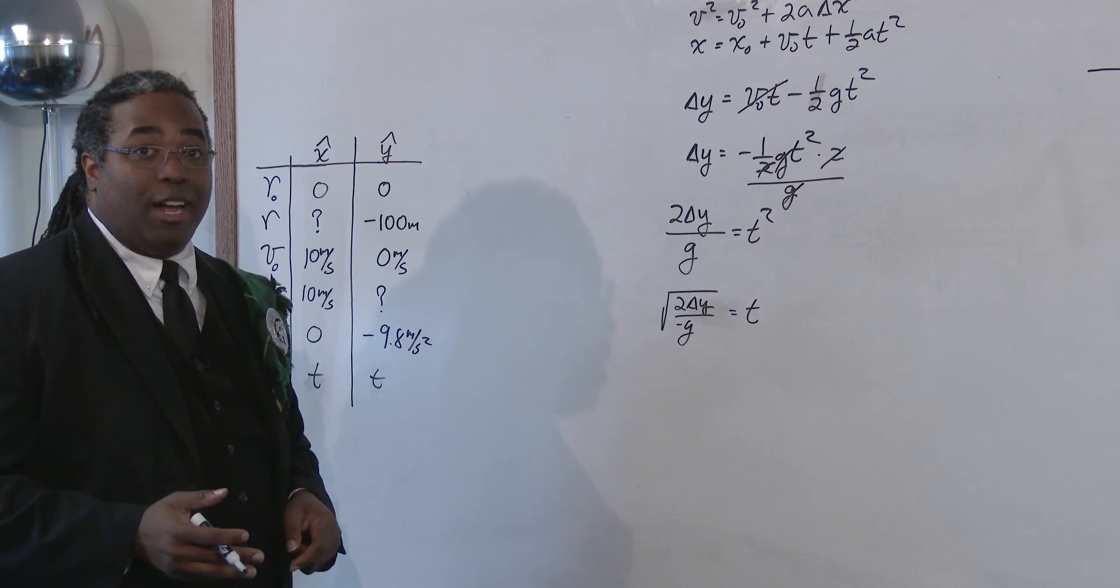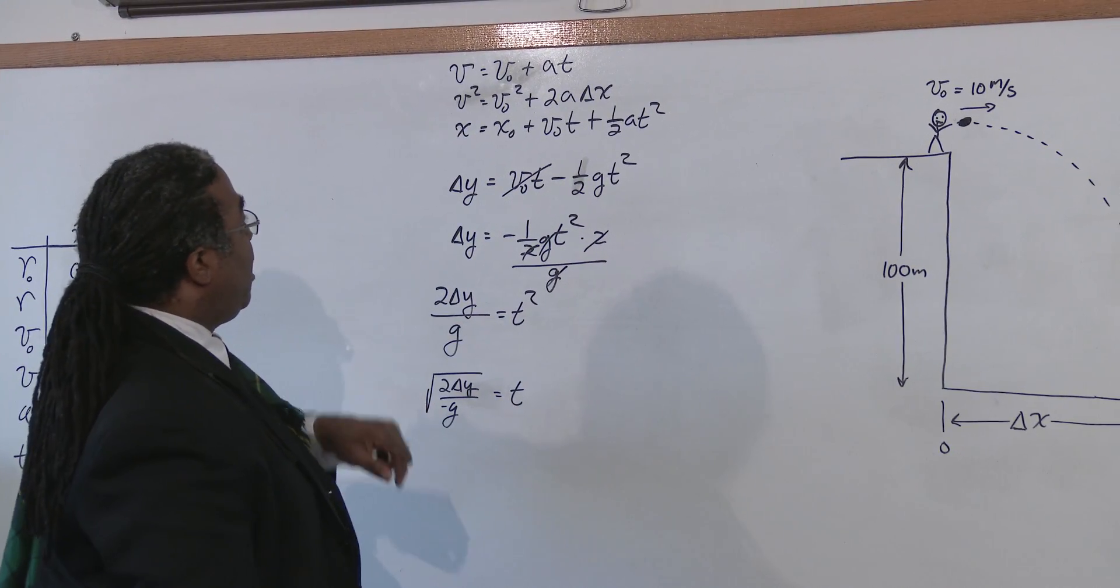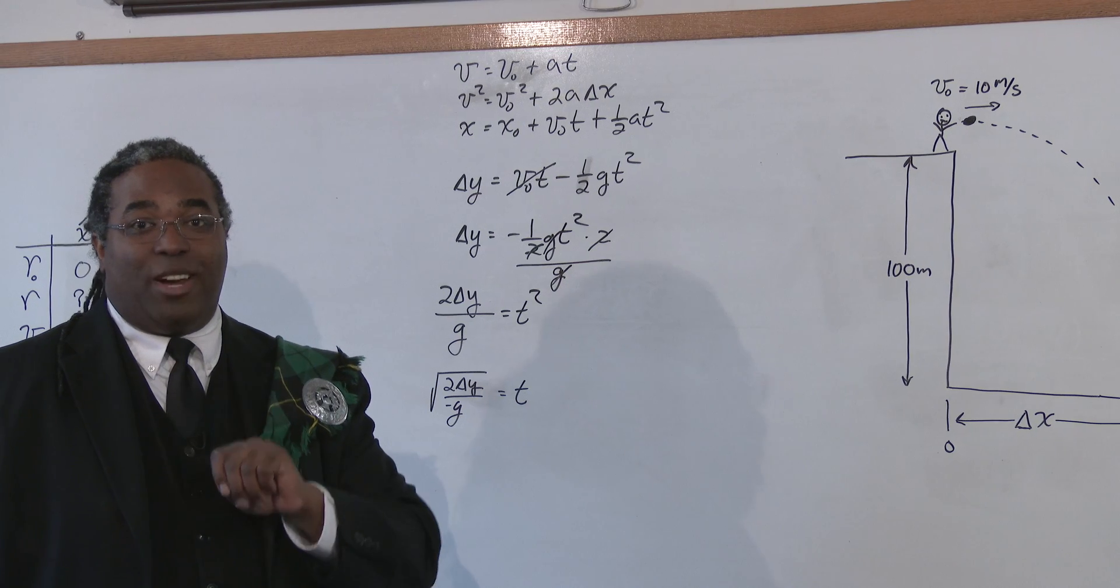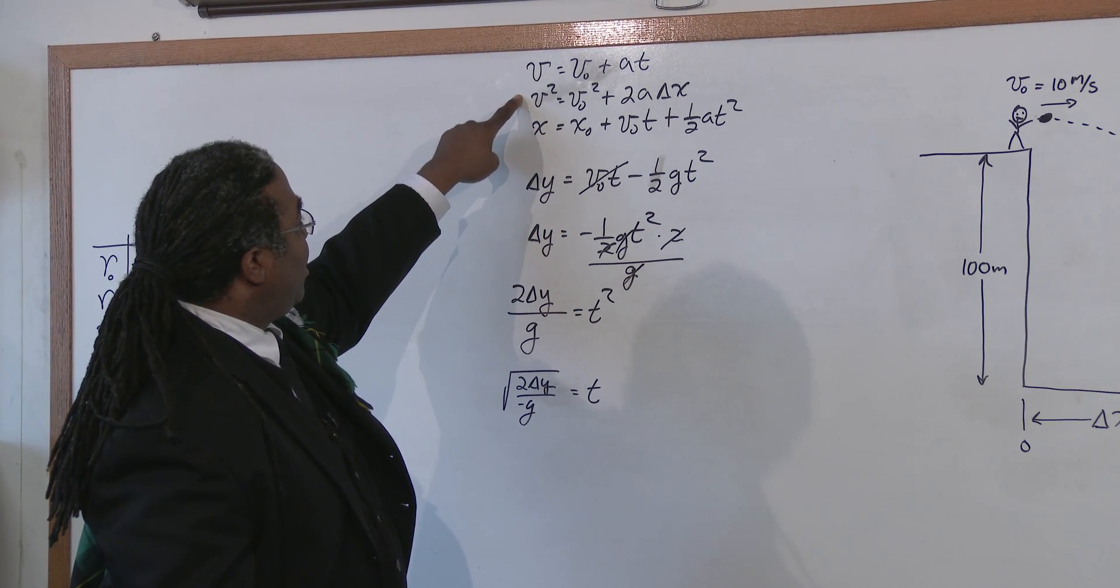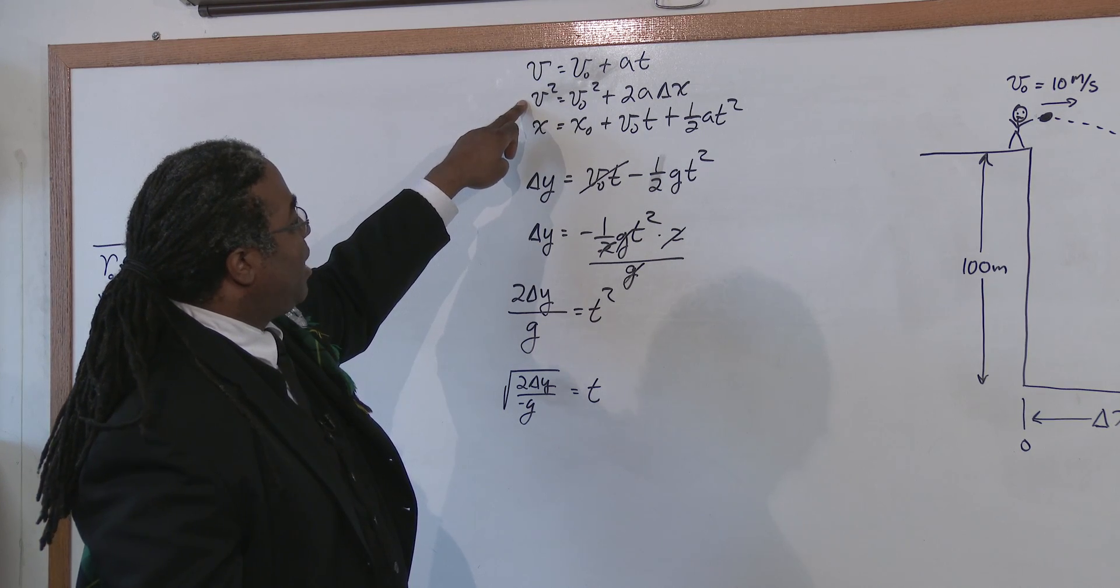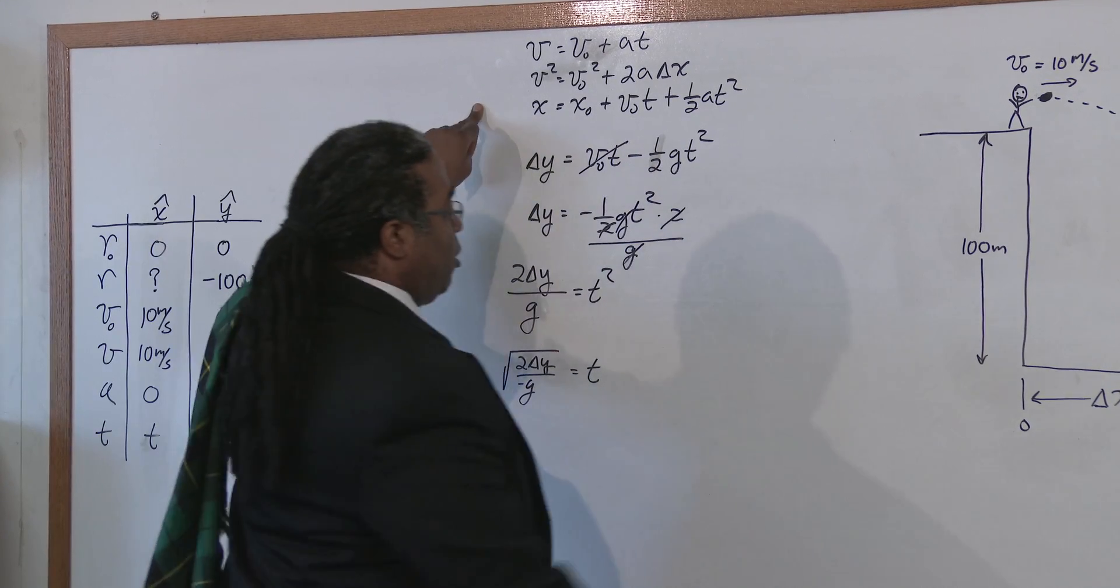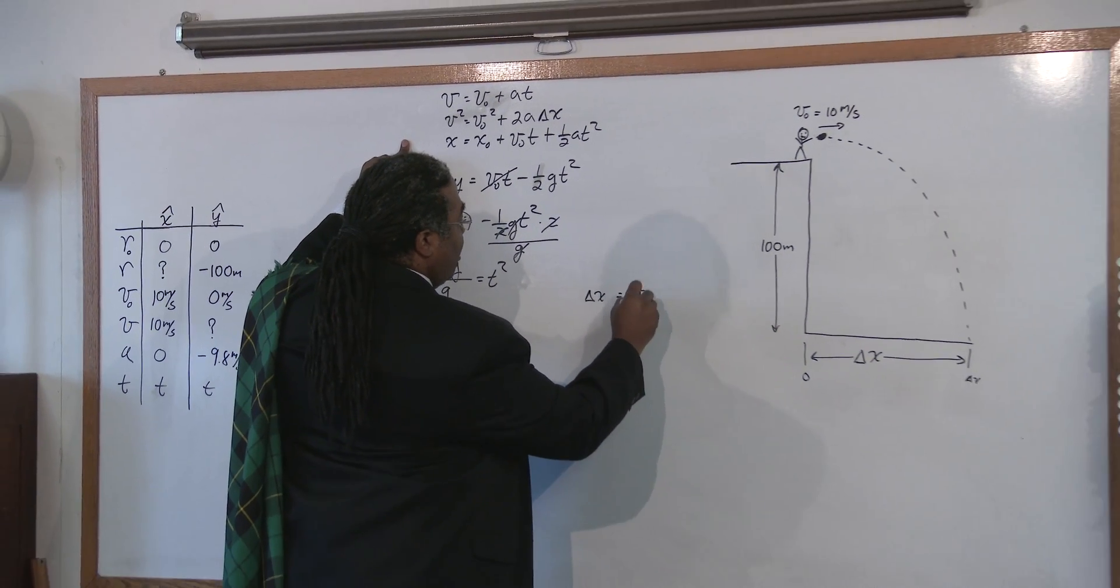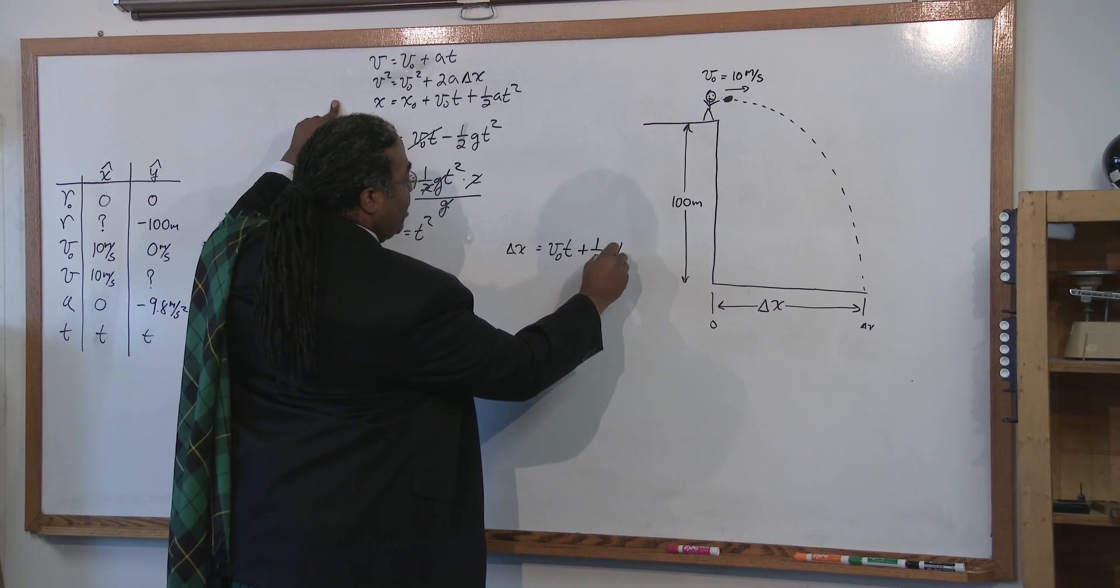So now let's solve our problem and get out of here. Now we're going to find out what's the distance in the x. What's the first question we ask? Right. Which equation tells me what I need? Well, the first equation doesn't have an x. The second equation we already found out doesn't work because a in the x is zero, so we're left with the third equation.